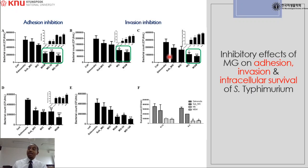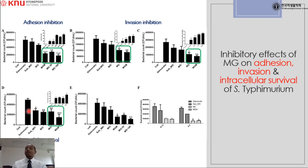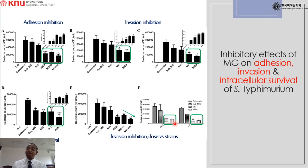Invasion was analyzed in both Caco-2 epithelial cells and RAW cells. In both cases, methyl gallate alone and in combination with marbofloxacin significantly inhibited Salmonella Typhimurium invasion. About 45% inhibition was observed in Caco-2 cells, and this increased significantly in RAW cells, where up to 67% of bacterial cell invasion was inhibited by the combination. Additionally, intracellular survival was inhibited by approximately 74% with the methyl gallate and marbofloxacin combination. These effects were consistent across all field strains tested, with methyl gallate showing dose-dependent inhibitory activity in all cases.